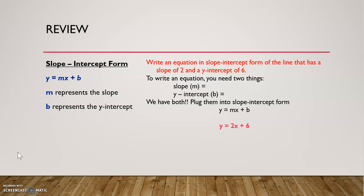Let's look at an example of an equation in slope-intercept form and we see this on the right-hand side of our screen. It says, write an equation in slope-intercept form of a line that has a slope of 2 and a y-intercept of 6. To write an equation, we need two things: we need a slope and we need a y-intercept, both of which we have.